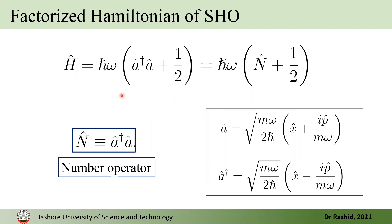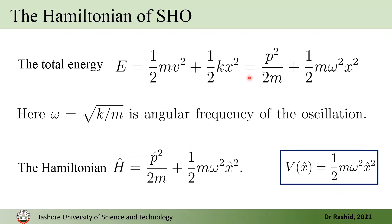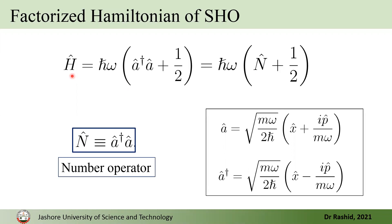From here, we can see that whatever the eigenstates for the number operator are also the eigenstates for the Hamiltonian operator. Now, these lowering and rising operators are real quantities.